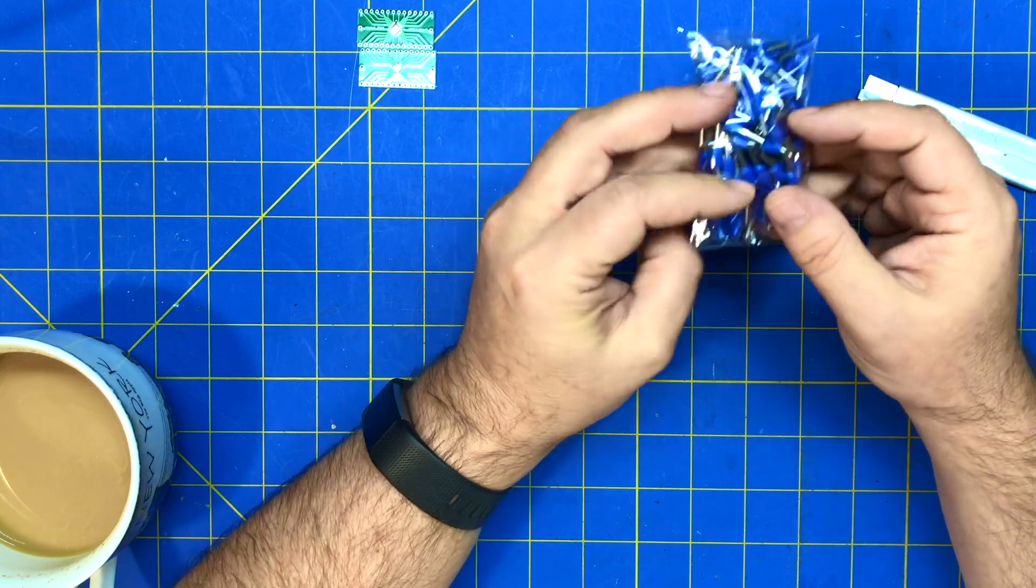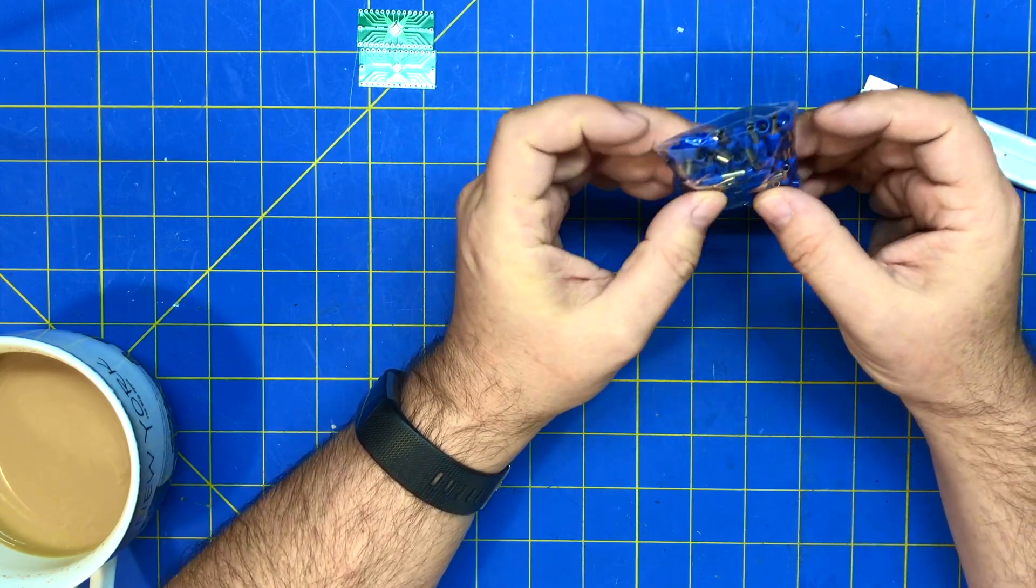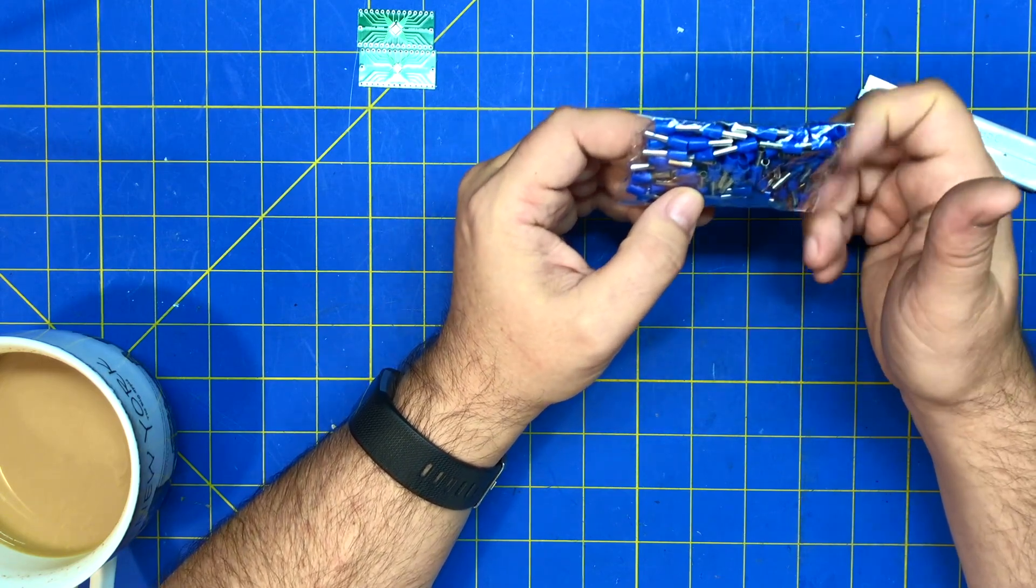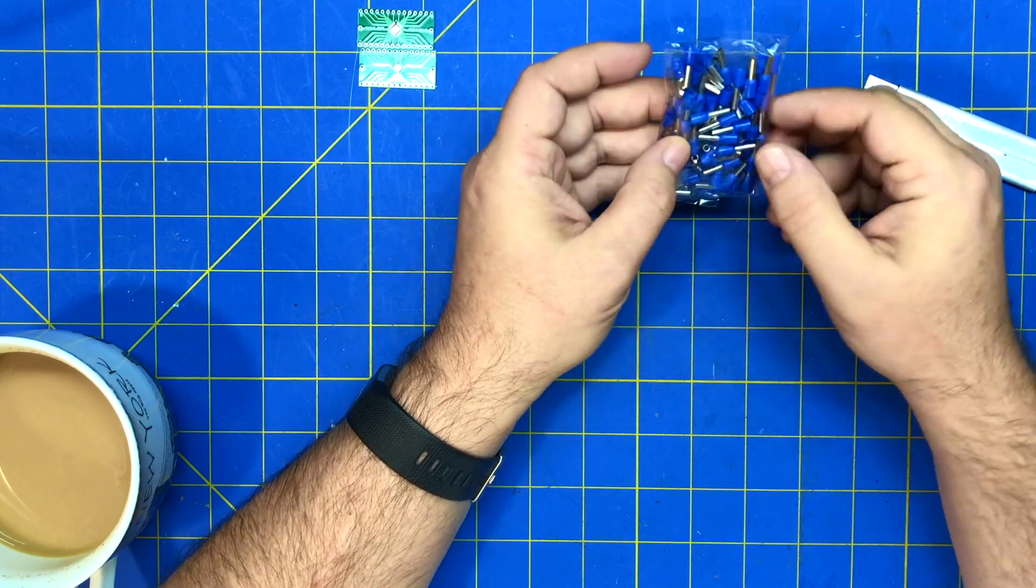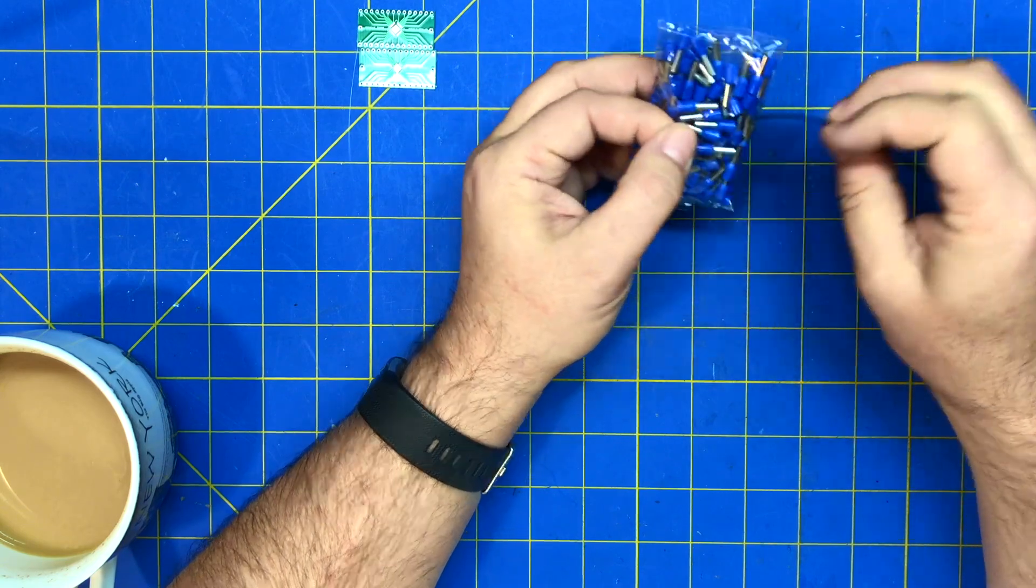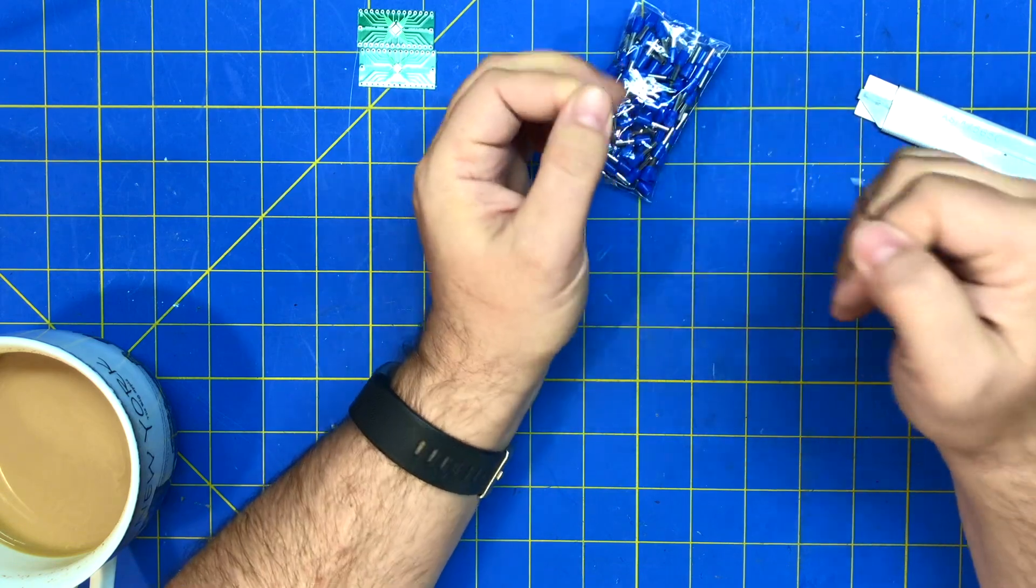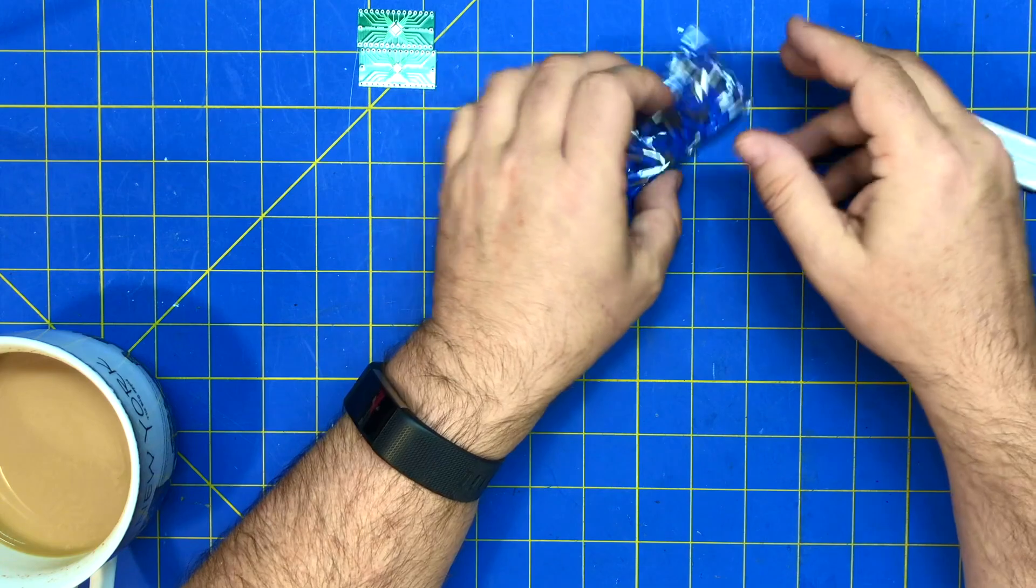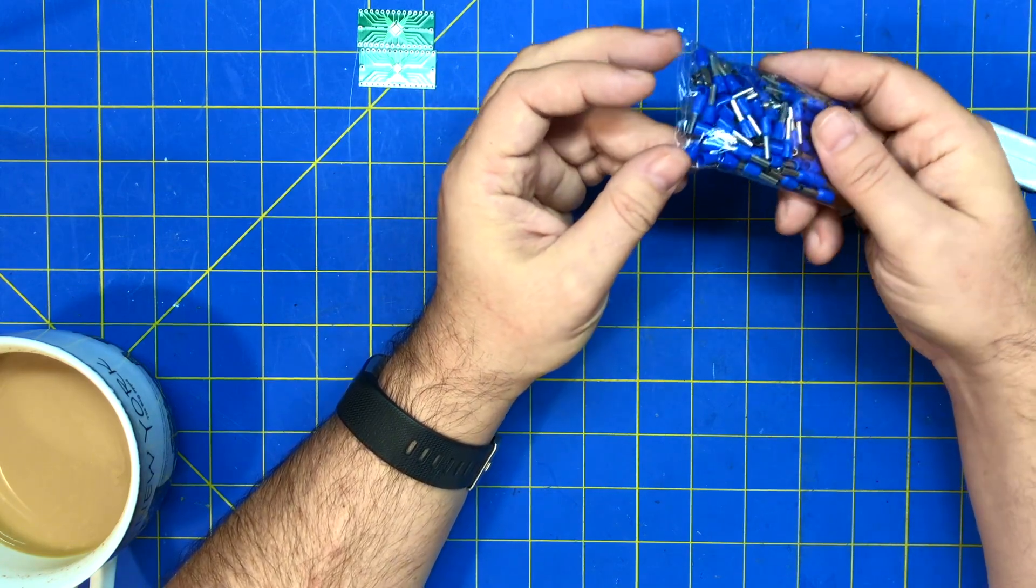I don't have a crimper for ferrules specifically, but you should still be able to use them just with a normal crimper, or maybe I can make something that'll circular crimp it a little better. But these go on the ends of your bare wires. You know, you stick your wire in there, and you crimp it, and this way you don't have fraying wires when you put it into a screw terminal, terminal block, or whatever.